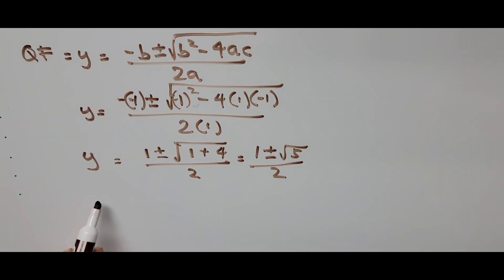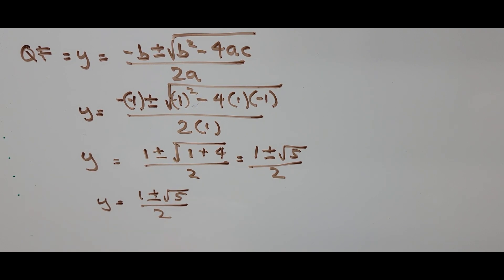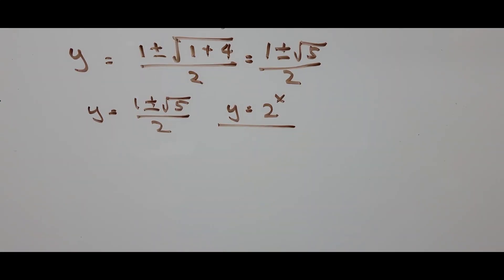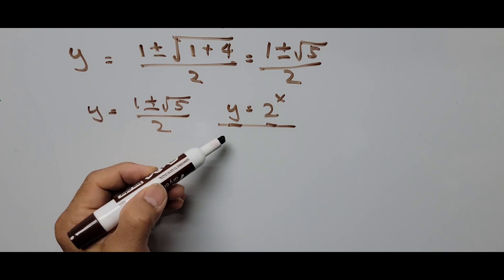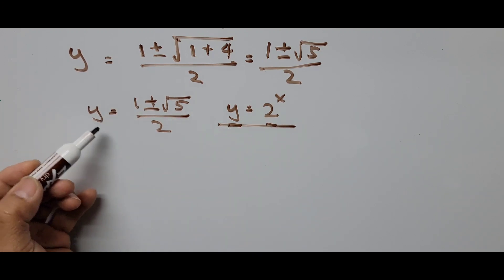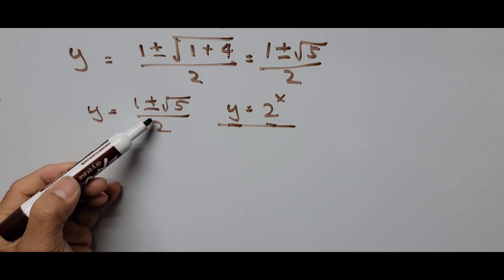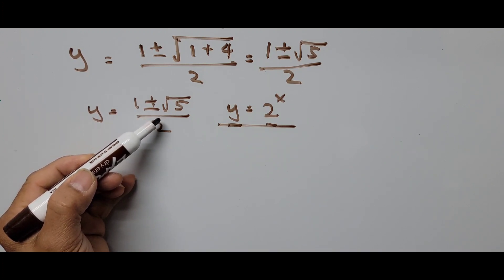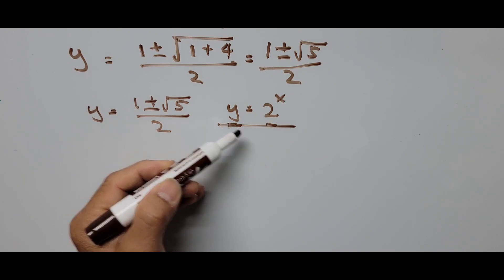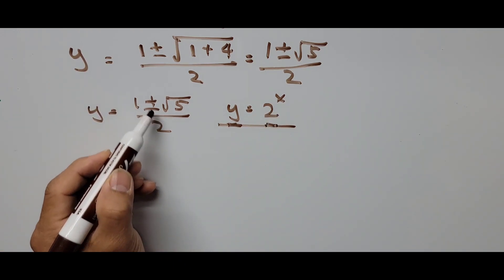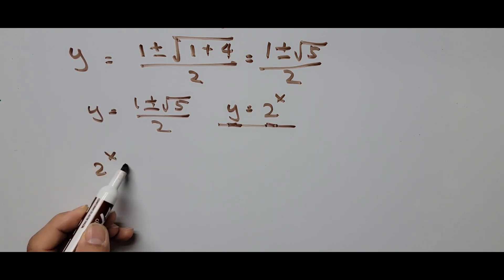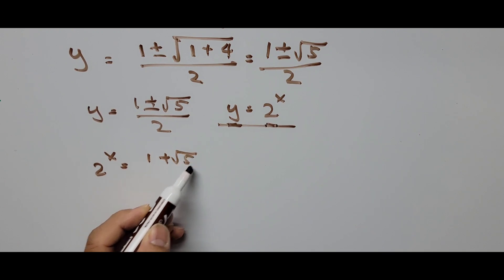So y equals (1 ± √5) / 2. Recall that y is just a substituted variable: y equals 2 to the power of x. Since 2 to the power of x is always positive, y must be a positive value. Since we have two roots — positive and negative square root of 5 — we discard the negative root so that y remains positive. So 2 to the power of x equals (1 + √5) / 2.